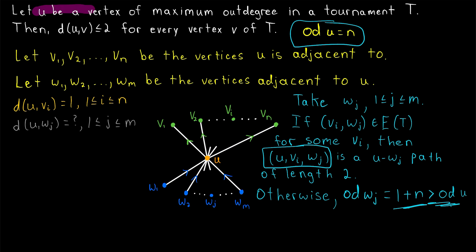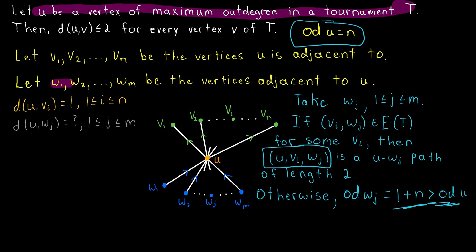Thus, if U is a vertex of maximum out degree in a tournament T, whether the vertex is U itself, a vertex that U is adjacent to, or a vertex that is adjacent to U, the distance between U and that vertex is less than or equal to 2.